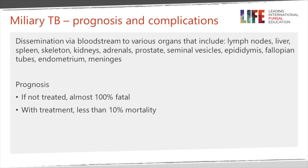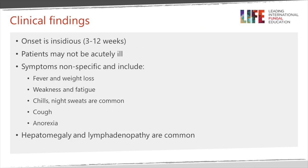Even with treatment, there's still a significant mortality. The clinical background is important: the onset can be insidious and the patient may not be as acutely ill as you'd expect with widespread tuberculosis. Sometimes there are non-specific symptoms — chills, cough, anorexia — and it's very common for the person to have an enlarged liver because of spread there, and lymphadenopathy also.